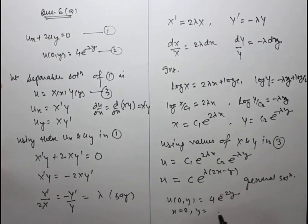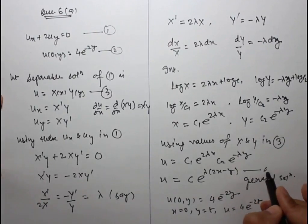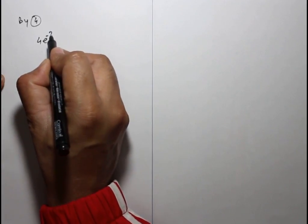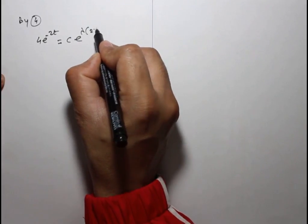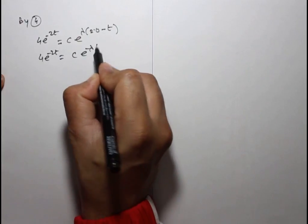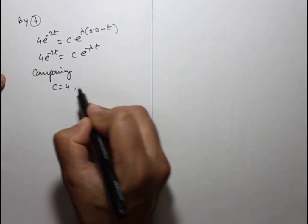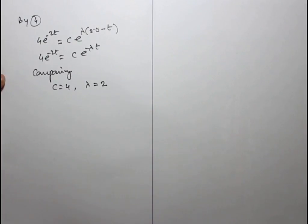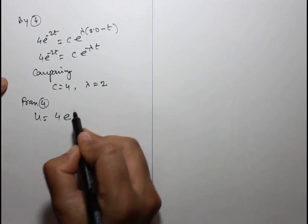Applying the initial condition u(0, y) equals 4e^(minus 2y): substituting x equals 0, we get 4e^(minus 2y) equals c·e^(minus λy). Comparing, c equals 4 and λ equals 2.